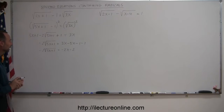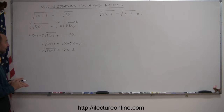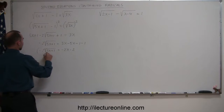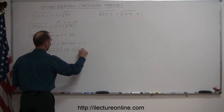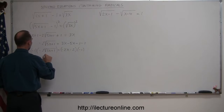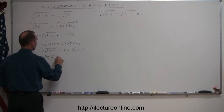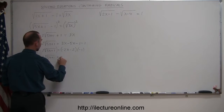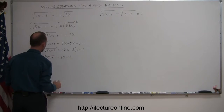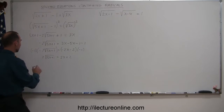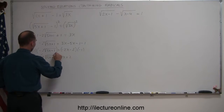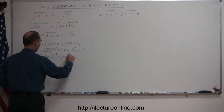Since every term has a negative in front of it, I'll multiply both sides of the equation by negative 1. Then I get 2 times the square root of 5x plus 1 equals positive 2x plus 2. Now I'm ready to square both sides of the equation to get rid of this radical.